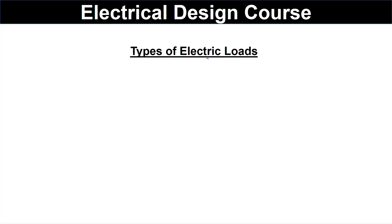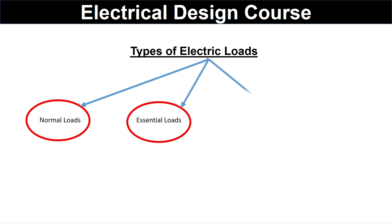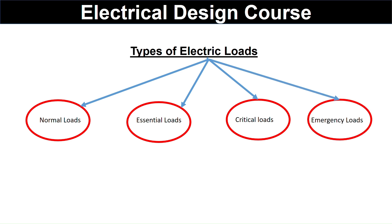Types of electrical loads: generally the electrical loads are divided into four categories. First is the normal loads, second is the essential loads, third will be the critical loads, and fourth will be the emergency loads. We will see all the loads one by one — what are normal loads, essential loads, critical loads, and emergency loads.